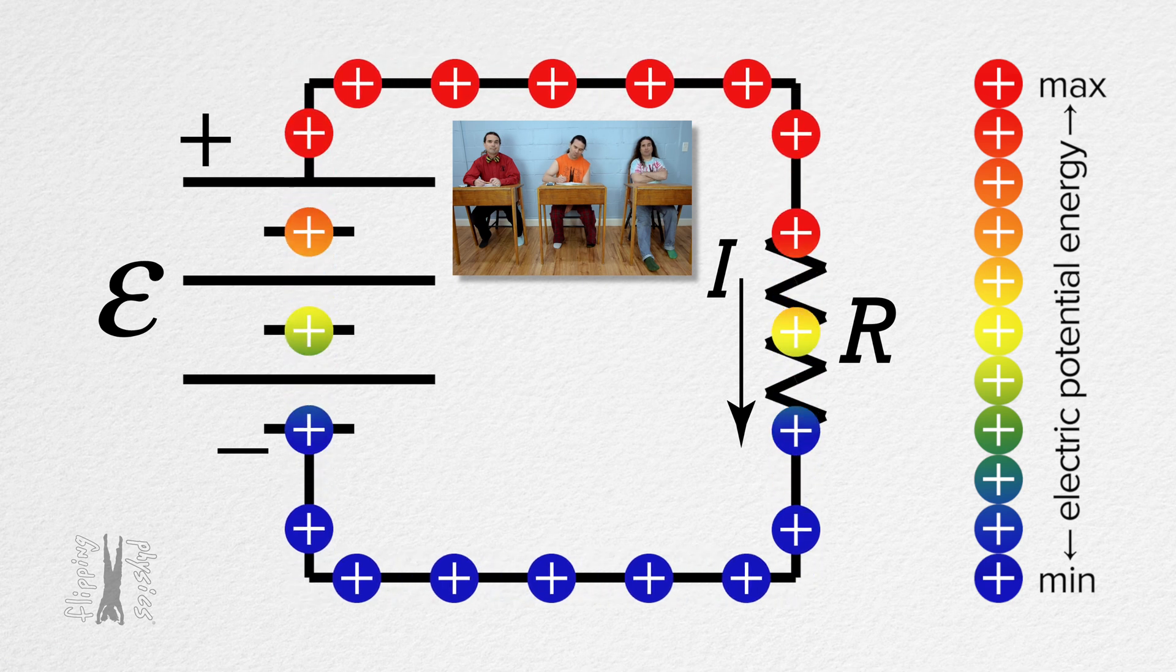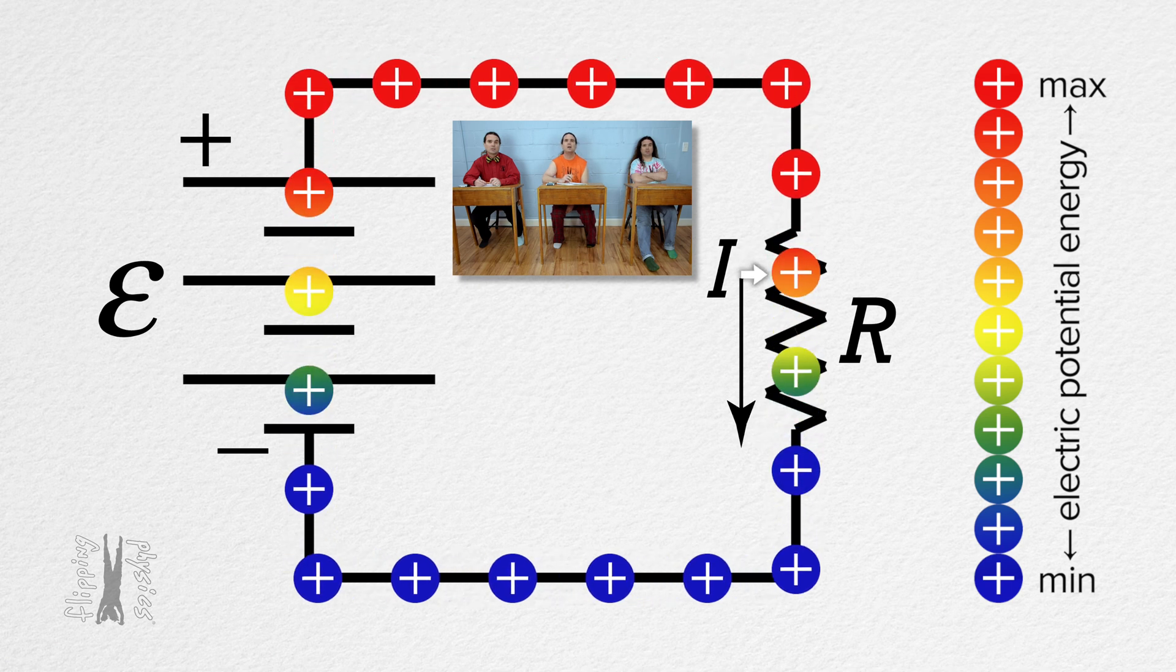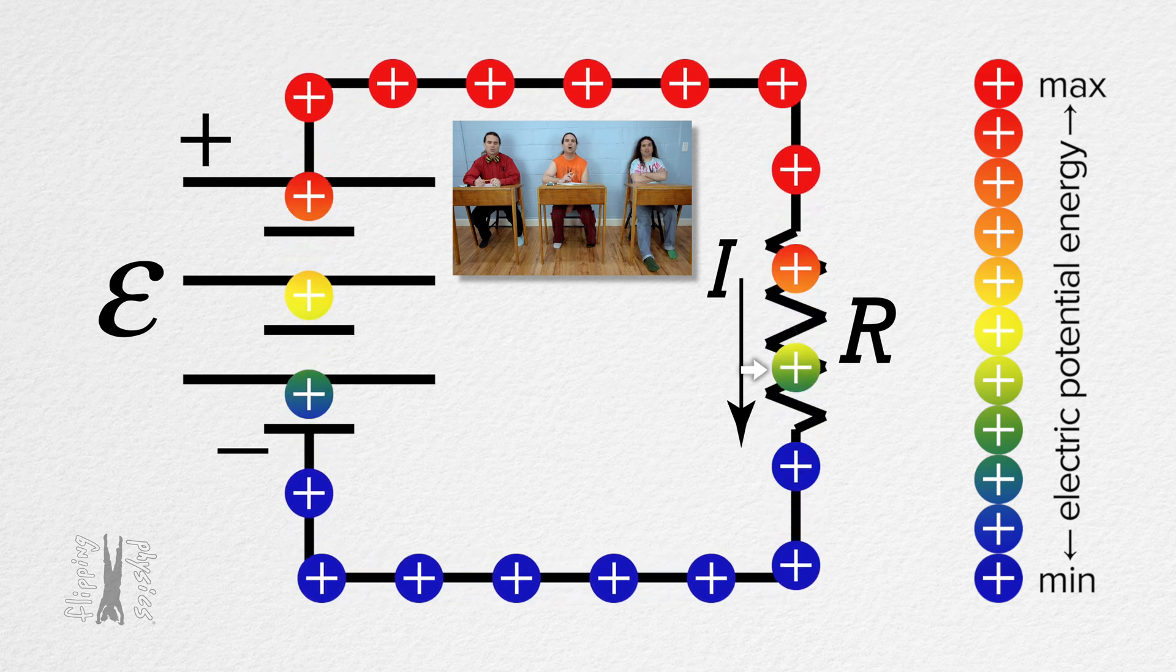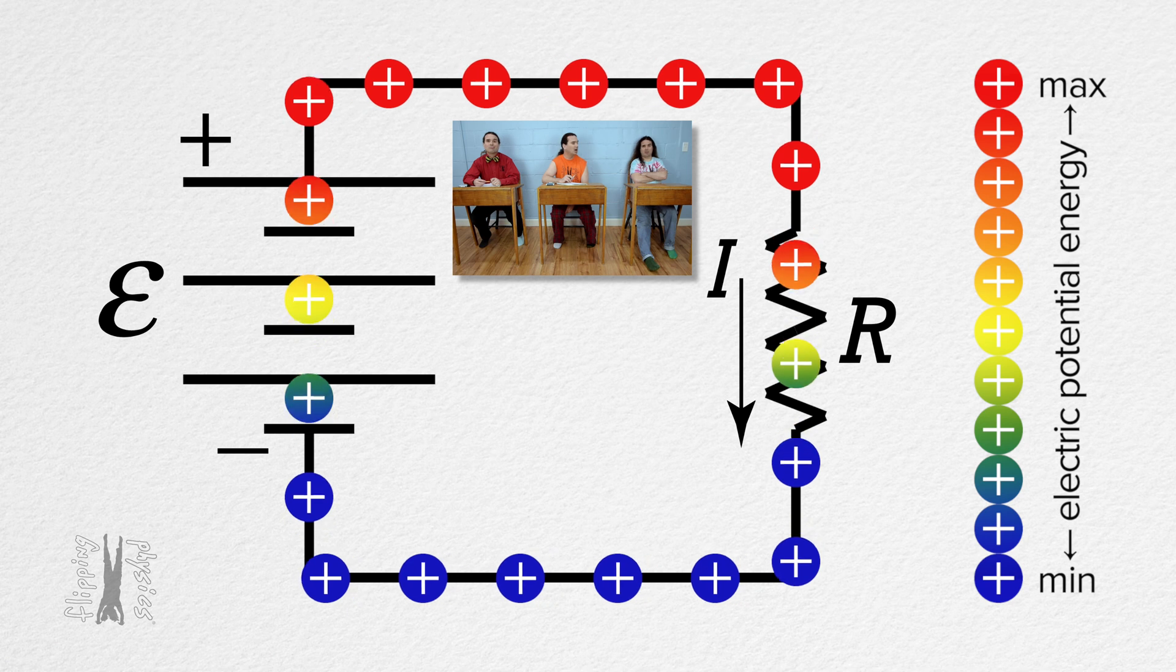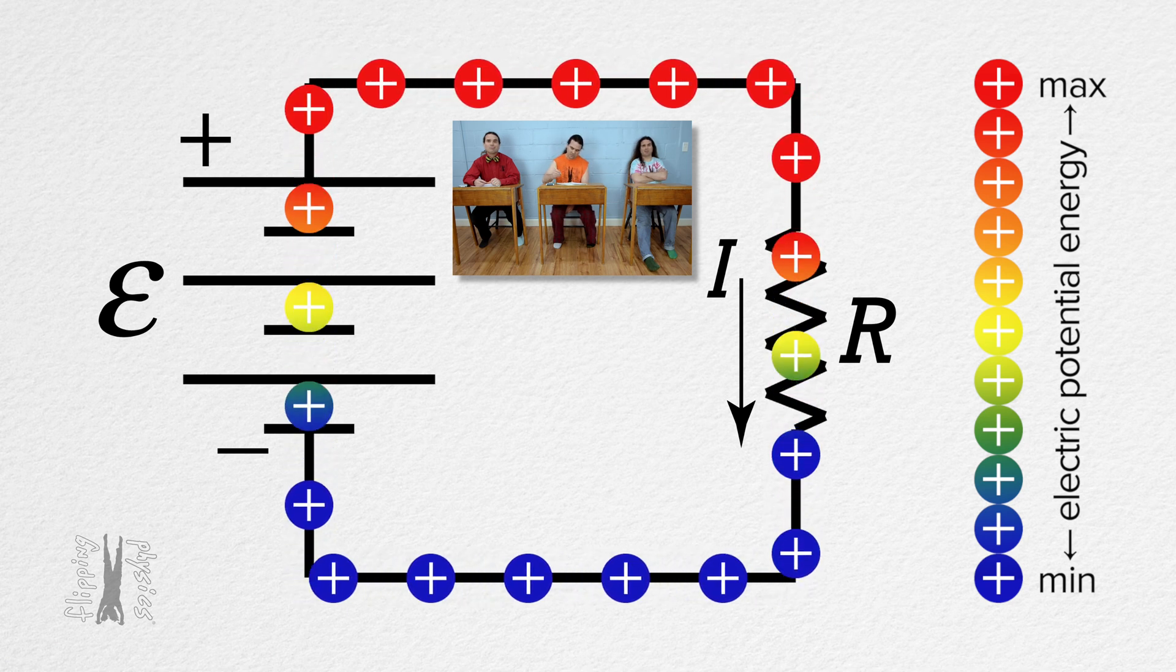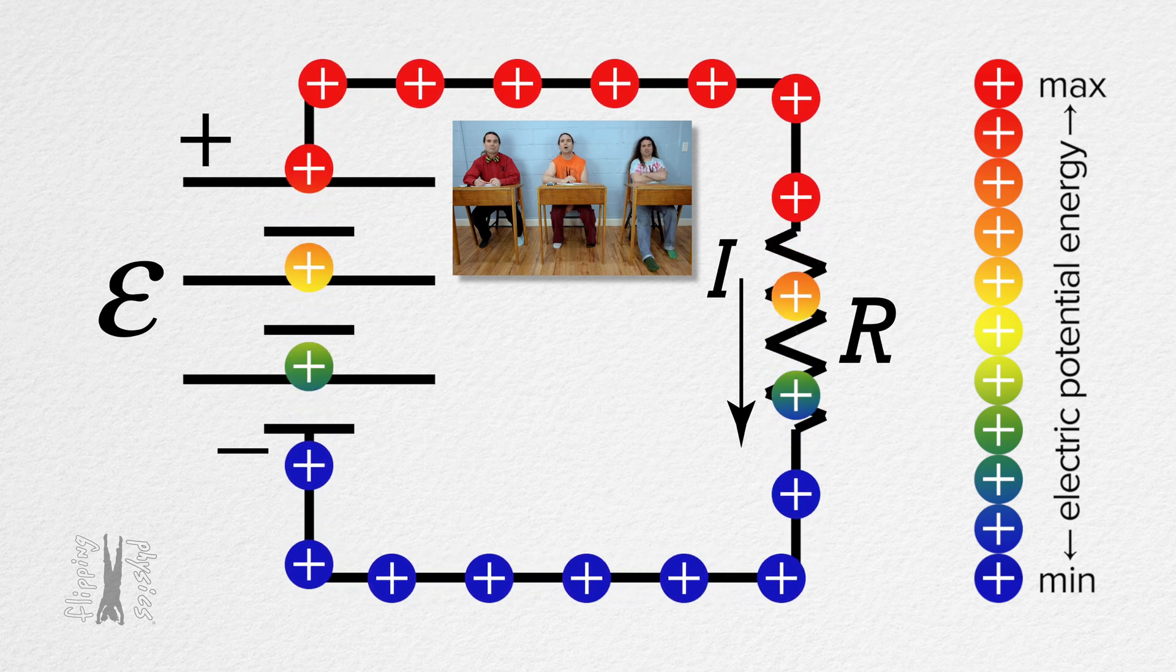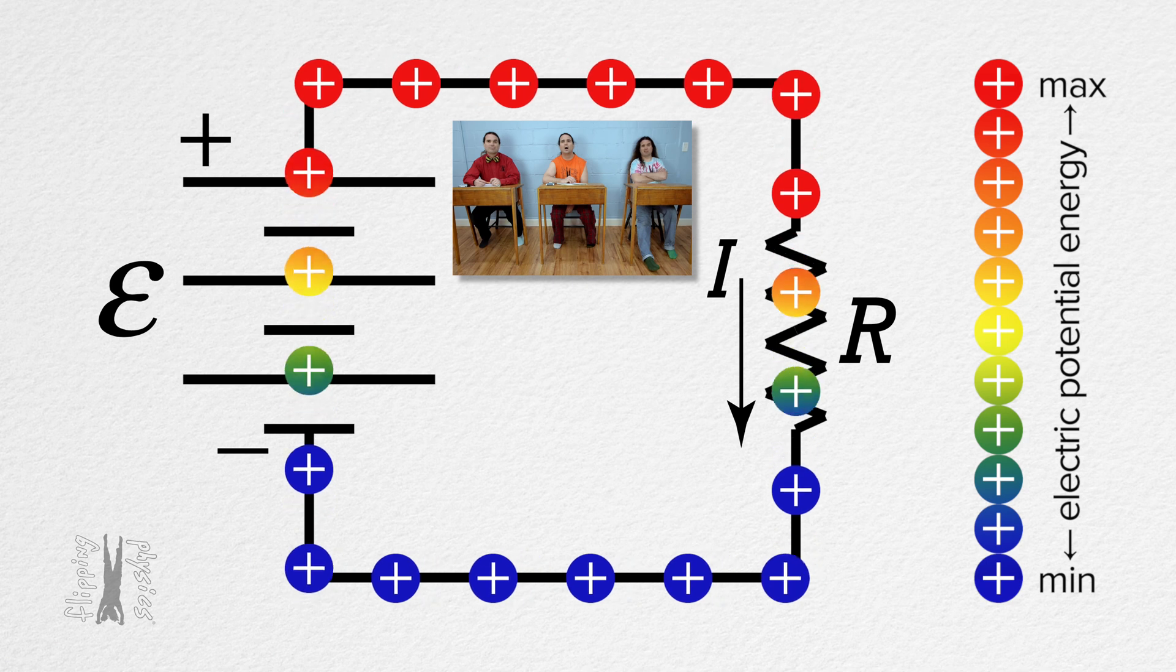As charges move through the resistor, their color goes from red to blue because their electric potential energy is being converted to heat. And if this resistor were a light bulb instead, it would also be converting the electric potential energy to heat, light, and sound energy. That's it. That's all I see. Thank you, Bo.